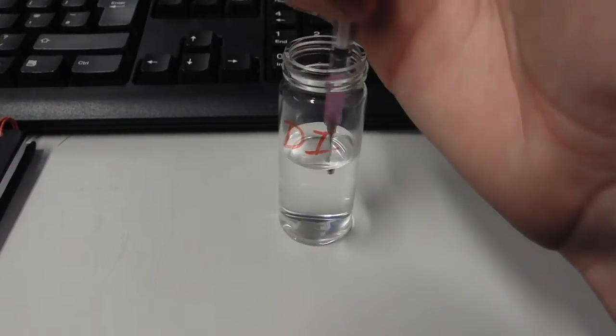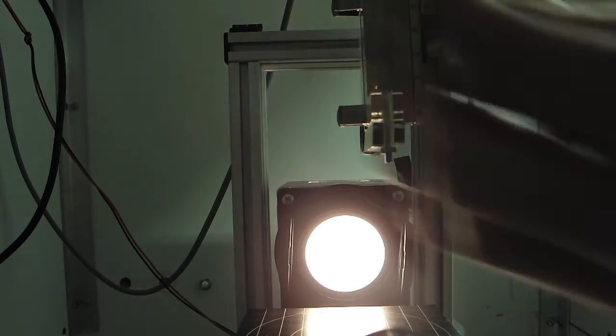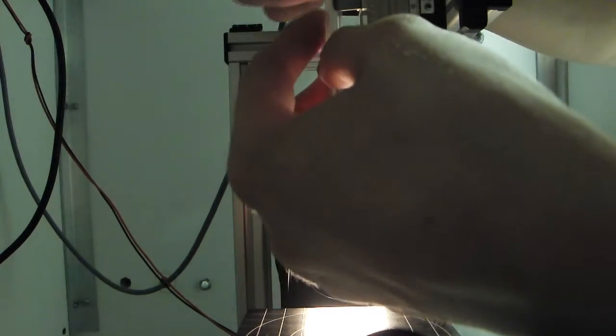Next we draw up a syringe of the fluid in question. Here we're using deionised water. The syringe is then inserted into the holder.